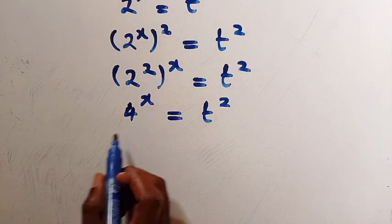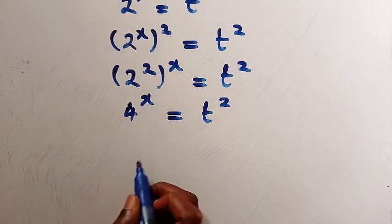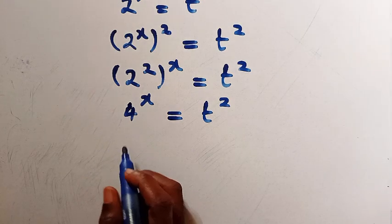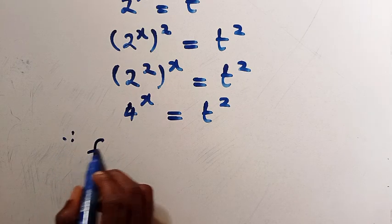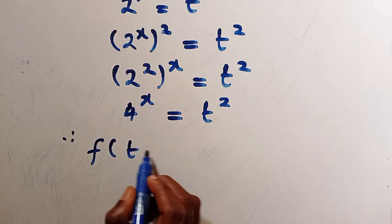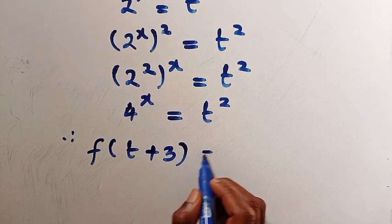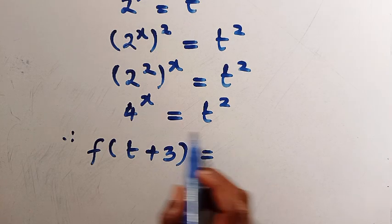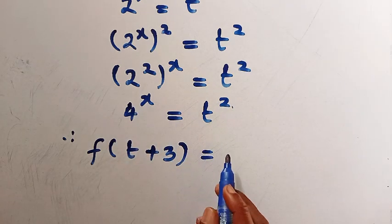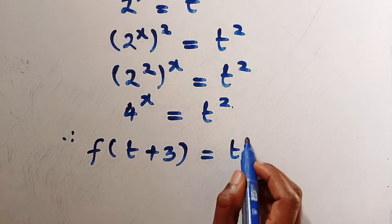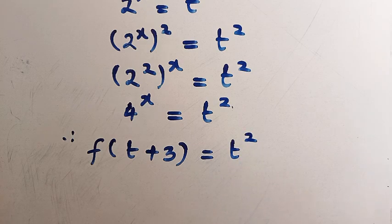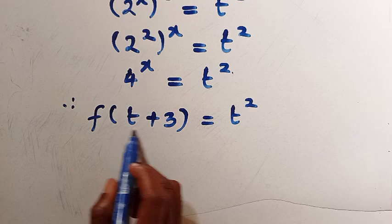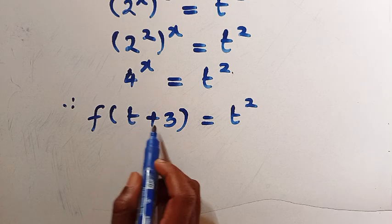From the argument we have in the domain, that is going to become t + 3. By replacing that, we have f(t + 3) = 4^x. But 4^x here is given as t², so replacing that we have f(t + 3) = t². What we need is f(x), and from here we have t + 3.